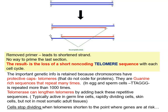The sequences of telomeres differ depending on the type of organism. For example, in egg and sperm cells, the sequence TTAGGG is repeated more than 1,000 times.